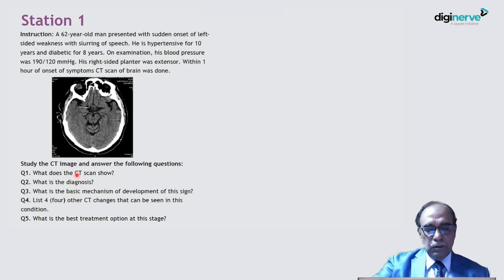When we construct a question there should not be any leading question. But here there is some leading question, that means what is the basic mechanism of development of this sign? That means there is a sign. So this is a leading question. Let me show the standard answer key.